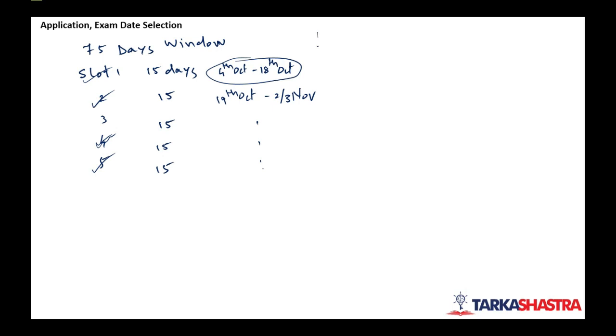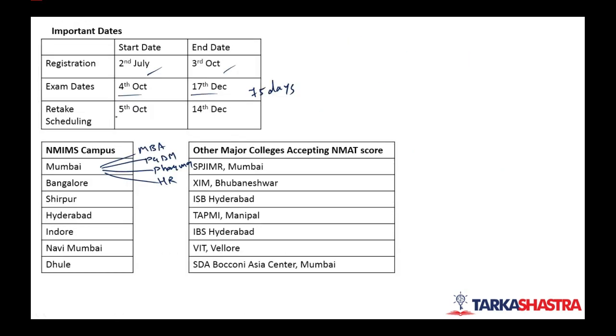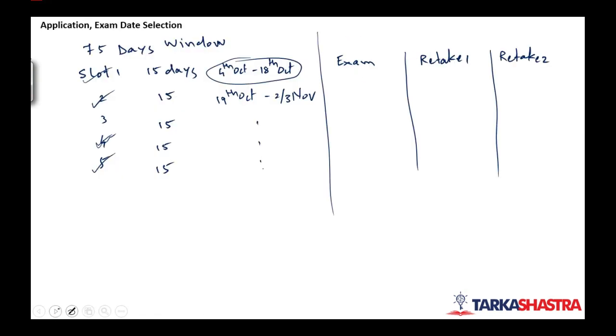Now NMAT is a very costly exam. You will have to appear for the exam. If you are not satisfied with your score you will appear for retake 1. If you are still not satisfied you will appear for retake 2. For exam you will have to pay 2500 rupees plus applicable taxes. For retake if you want to appear for one retake you will have to pay 2000 rupees plus taxes and retake 2 will be again 2000 rupees plus taxes.